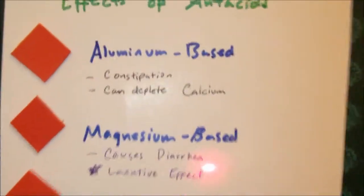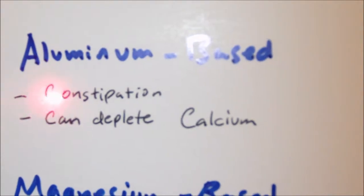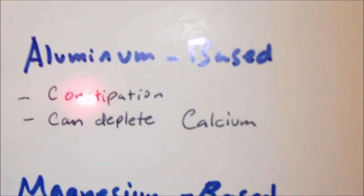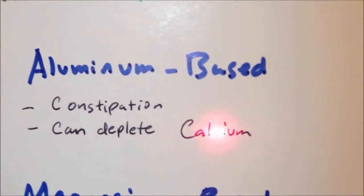So with aluminum, such as aluminum hydroxide, such as Maalox and Mylanta, it causes the patient constipation. Now take note that long-term use of aluminum compounds could also deplete the patient's body of calcium.